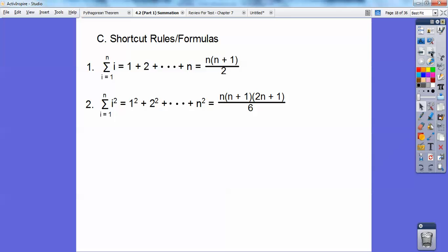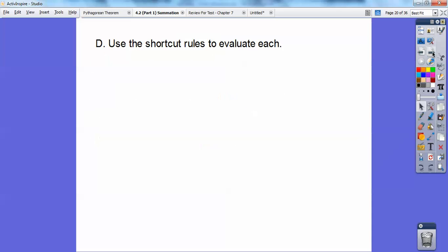So the summation of i equal 1 to n of i squared, you use this formula: n times n plus 1 times 2n plus 1 all over 6. And if you have i cubed, then it becomes n squared and then quantity n plus 1 squared all over 4. Those are your shortcut rules. So use those to evaluate each of these. Here we go.